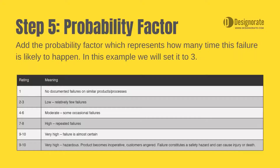Step 5: The probability factor. Add the probability factor, which represents how many times this failure is likely to happen. In this example, we will set it to 3.